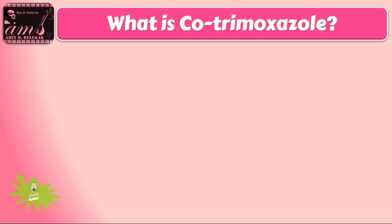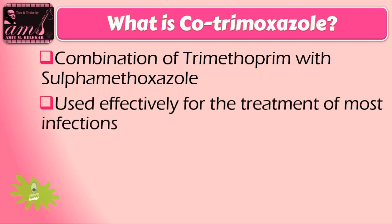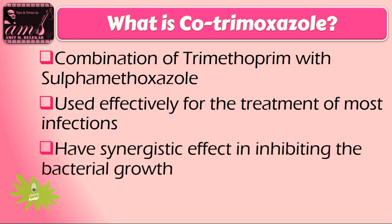First we have to discuss about what is cotrimoxazole. Cotrimoxazole is a combination of sulfonamide with trimethoprim. This combination is used effectively for the treatment of most infections. These two drugs have a synergistic effect in inhibiting bacterial growth.